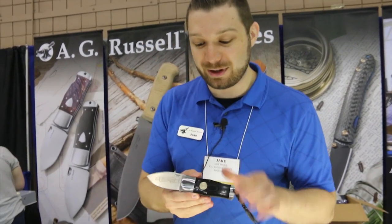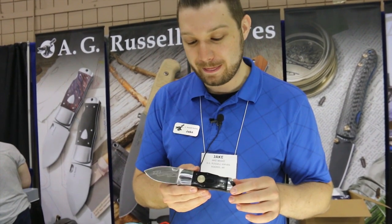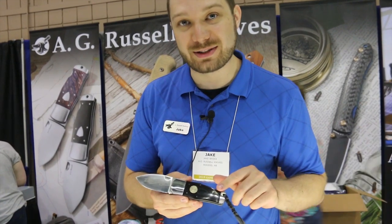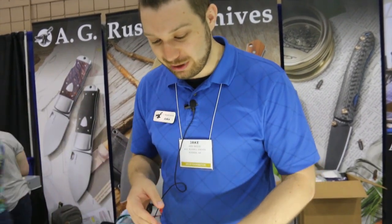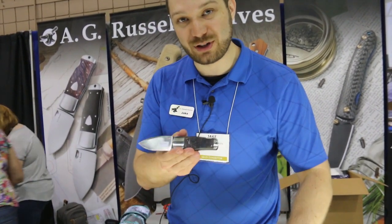This is Jake with AG Russell Knives. Today we're going to go over the Sunfish II. This is a new knife that we've developed here. The original knife is the Sunfish Texas Ranger. This was designed in 2010, but we remade it into the Sunfish II.